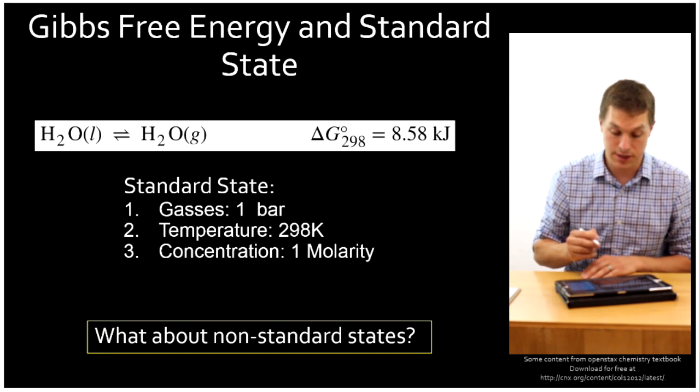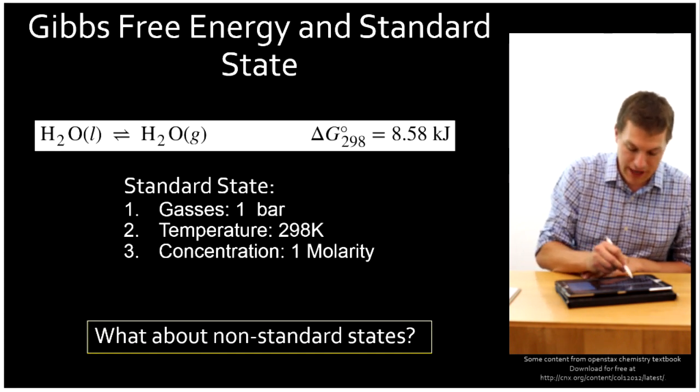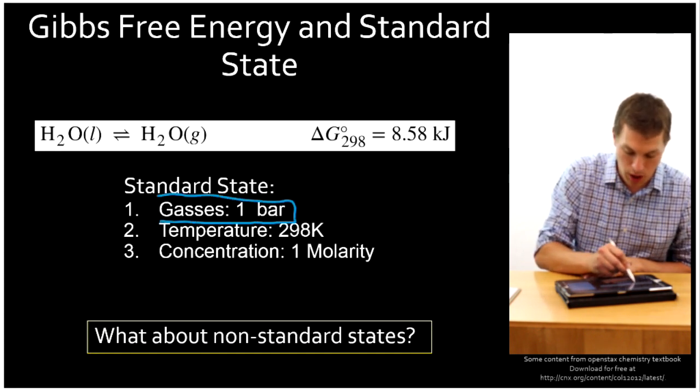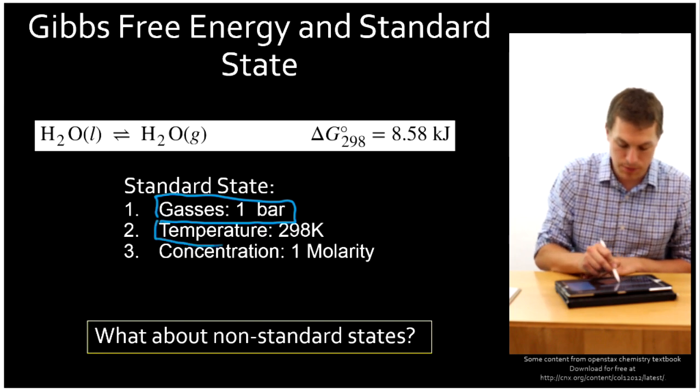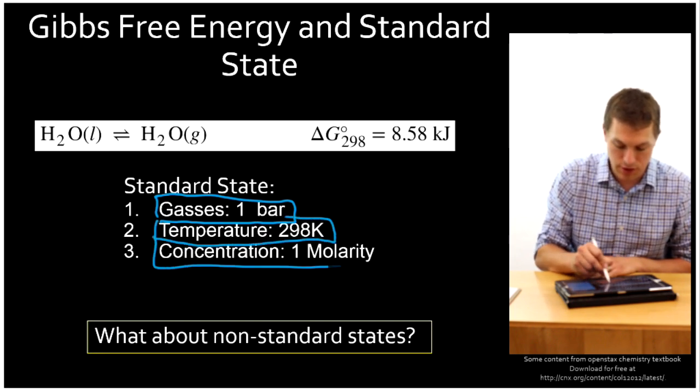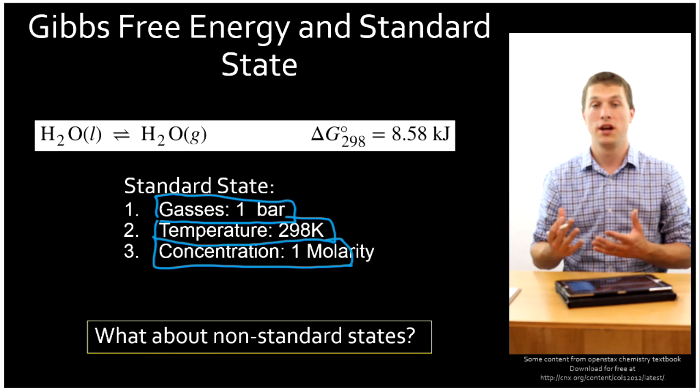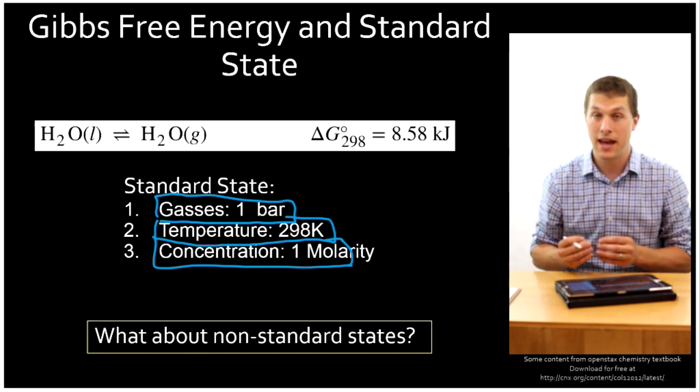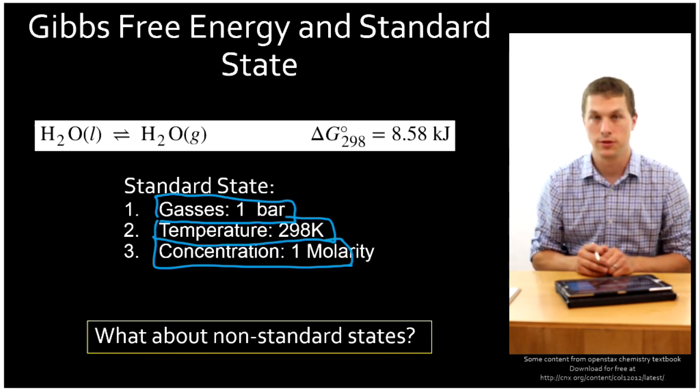So what are the specific conditions? Well for gases, the pressure has got to be one bar. The temperature is always going to be 298 Kelvin, and the concentration is always going to be one molar. So basically if you're running a reaction and you want to find the standard state Gibbs free energy, those are the conditions you want to use.